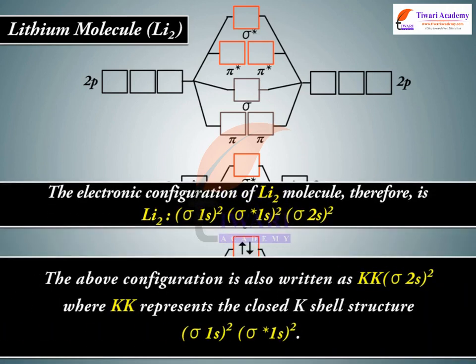The above configuration is also written as KK sigma 2s2, where KK represents the closed K-shell structure: sigma 1s2, sigma asterisk 1s2.